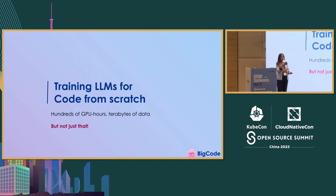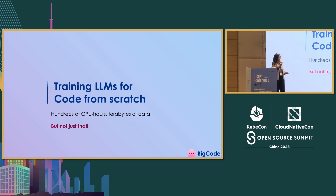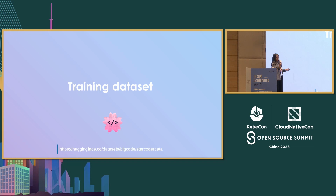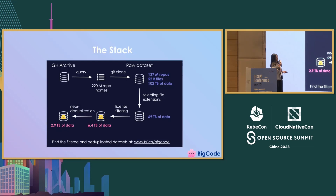So what does training these models look like when you want to do it from scratch? We all know it's hundreds or maybe thousands of GPUs and terabytes of data. But hopefully you'll learn that this is not enough and there's a lot that goes on behind the scenes. Everything I'm going to tell you is about a model called StarCoder, which is the code generation model that we released about two months ago. Let's first start with data, which I think is the most important component when it comes to training these models.